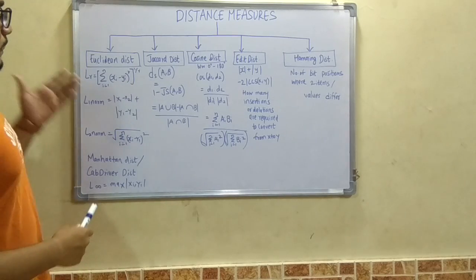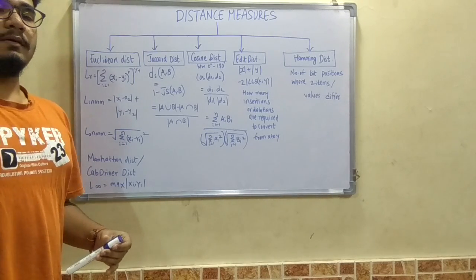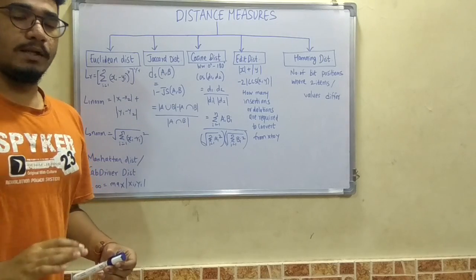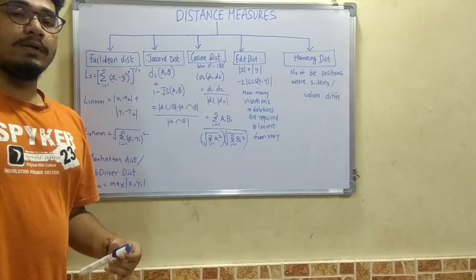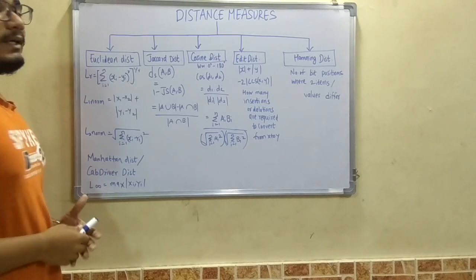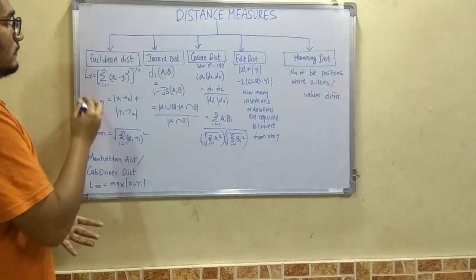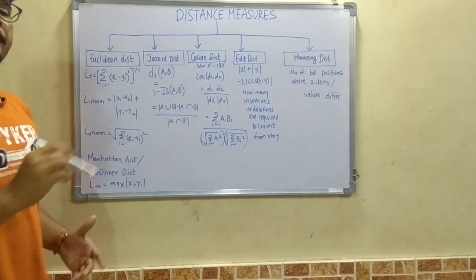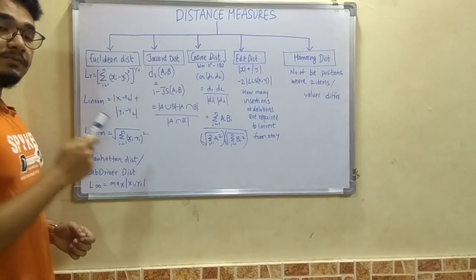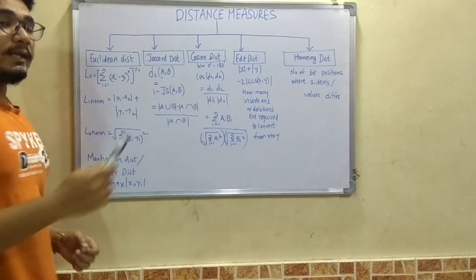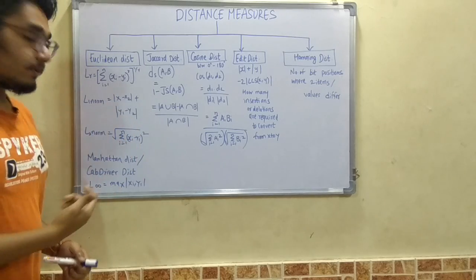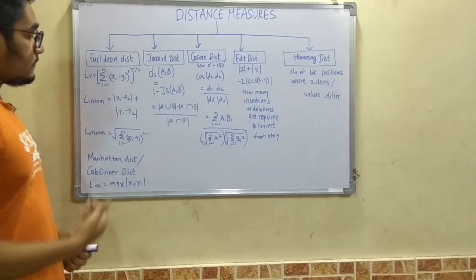First, Euclidean distance is basically the distance between two different points at two different levels, such as mountain level or sea level. It is classified under the general formula: Lr is given by summation i from 1 to n of (xi minus yi) raised to r, the entire thing raised to 1 by r.